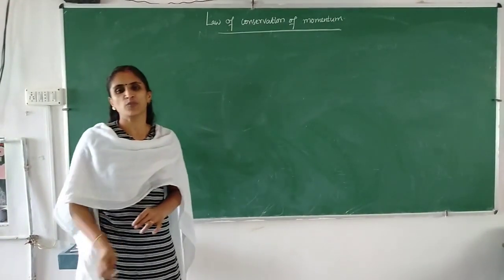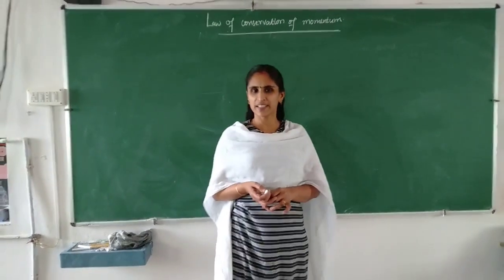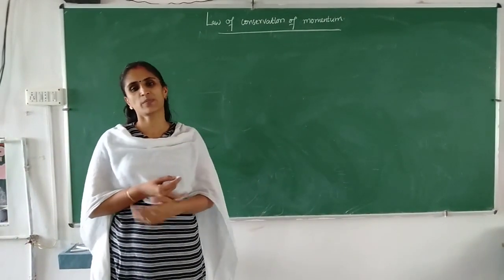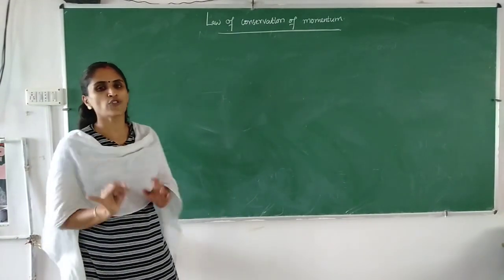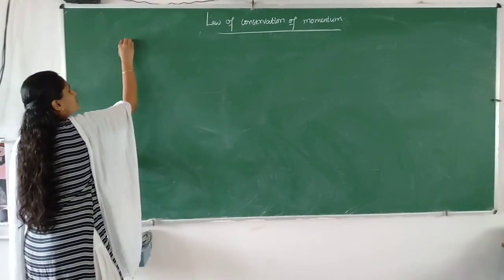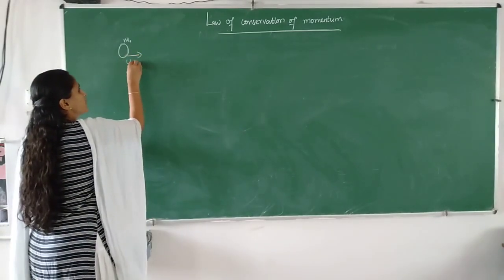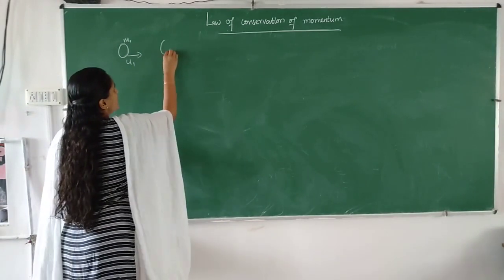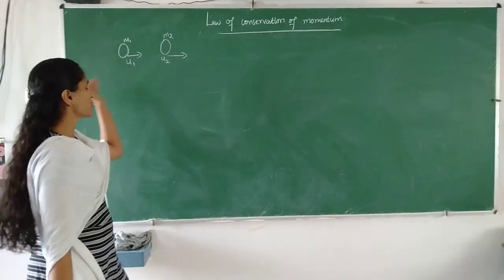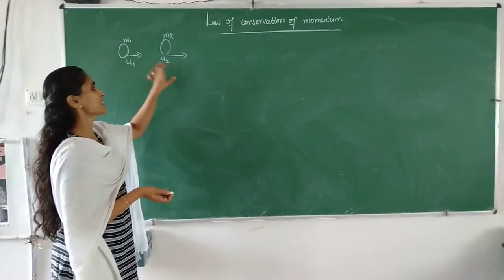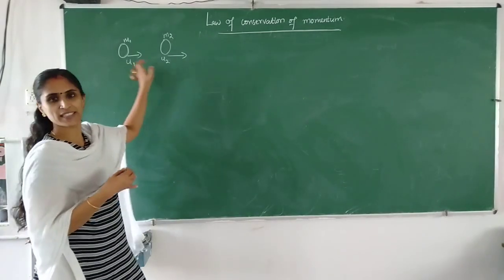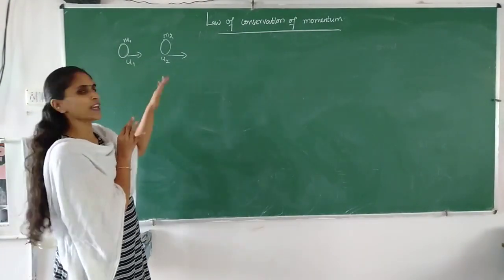You have already studied the law of conservation of energy and the law of conservation of mass. Here we will discuss the law of conservation of momentum. For this, we consider two objects. The first object has mass M1 and moves with velocity U1, and the second object has mass M2 moving with velocity U2. Both are moving in a straight line. If U1 is greater than U2, they will collide.